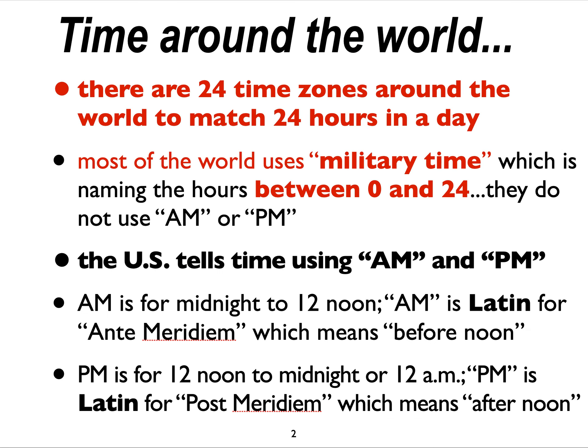A few things to remember. First of all, there are 24 time zones, as I've already mentioned. But most of the world is based on military time, not the U.S. system. We use a.m. or p.m. — a.m. is in the morning from midnight to 12 noon, and then p.m. is 12 noon to midnight. But most of the world is on military time — they use the clock from zero o'clock all the way up to 24 o'clock.